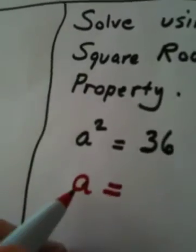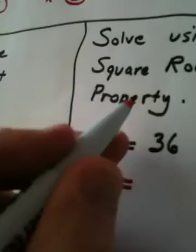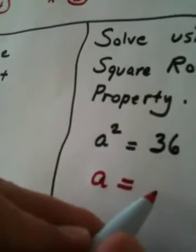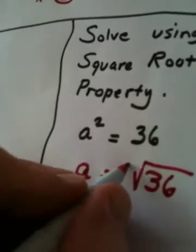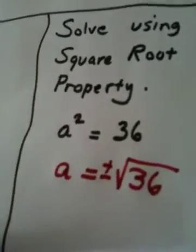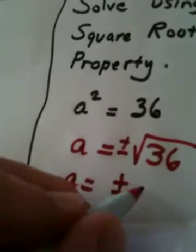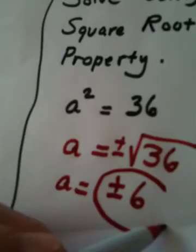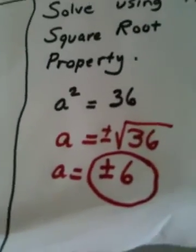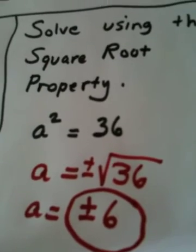So my answer, my a, those are my answers, are found by, it's called the square root property. So you use that. You take the square root of 36 and remember to put the plus or minus in front. So a is equal to plus or minus 6. And those are our two answers to this equation. And that method is not called factoring. That's called applying the square root property.